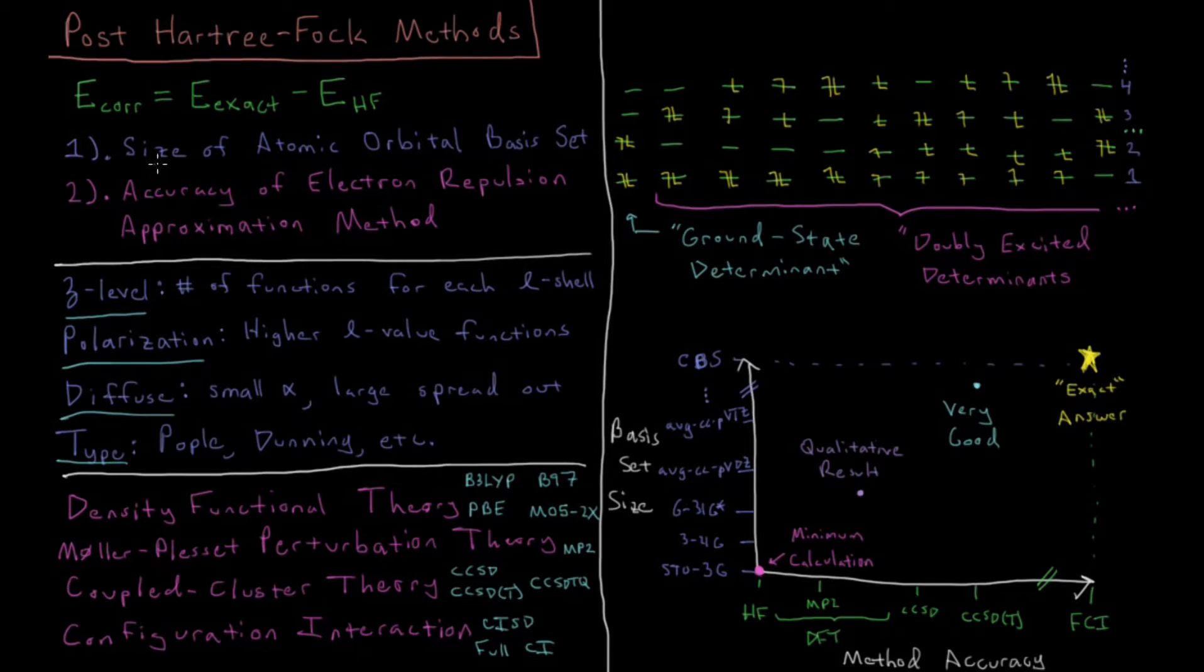In any atomic or molecular calculation, these are going to be your two main concerns. How many basis functions can I afford to use, because these calculations become quite computationally expensive quite quickly with increasing number of atomic orbitals in your basis set. And how accurately can I treat electron repulsion, because the more accurately you treat that, the more expensive your calculation becomes as well.